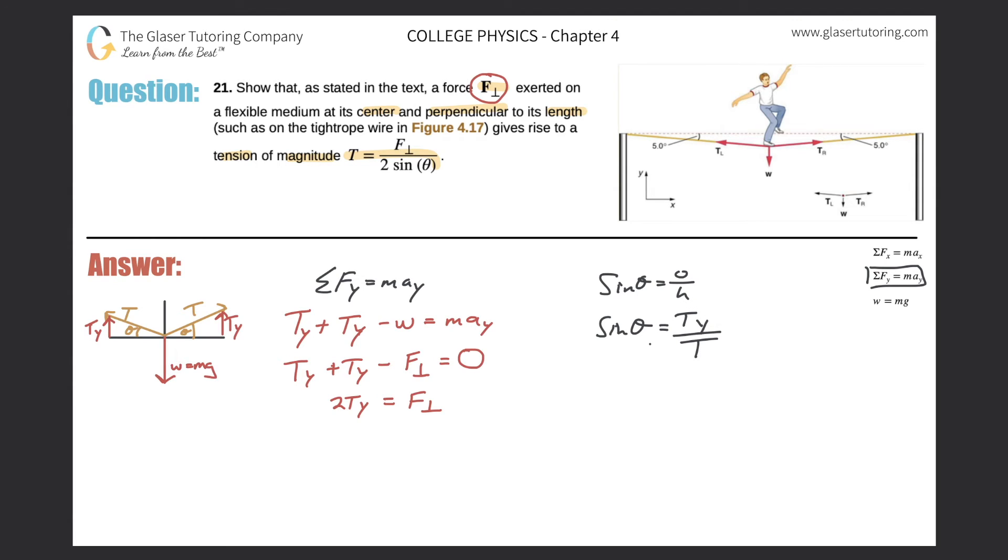Now solve this for tension in the y direction. Just cross multiply the tension over, so we get T times the sine of theta equals tension in the y dimension. Why did I do that? Because I want to substitute this into my equation for tension in the y direction.